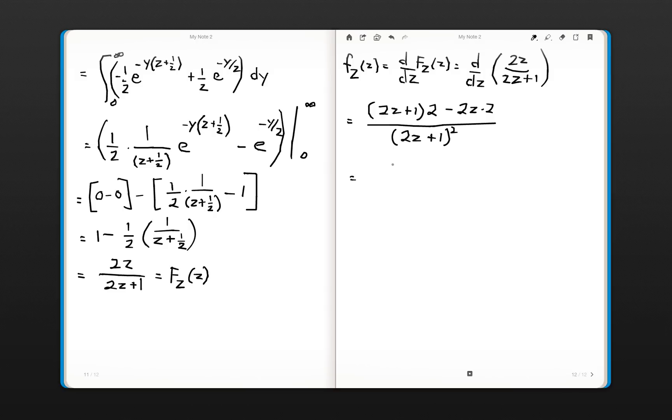You get your final answer is Z divided by (2Z plus 1) squared. And that is our density function of the ratio of the independent random variables X and Y. Thank you.